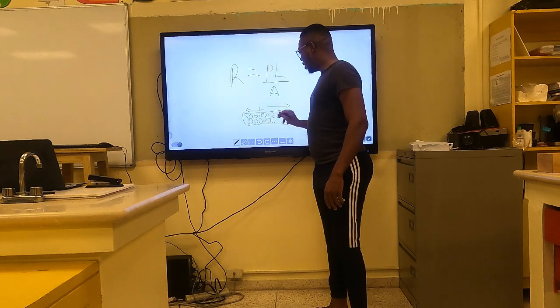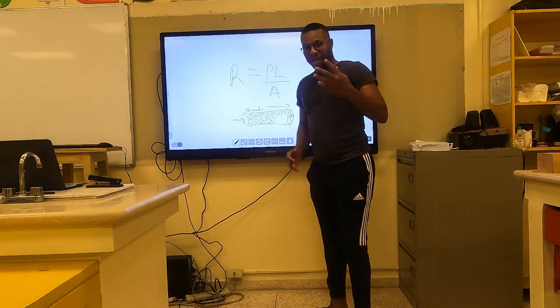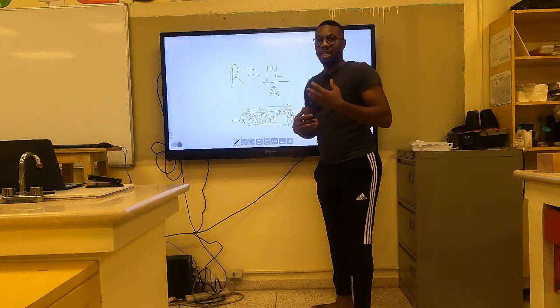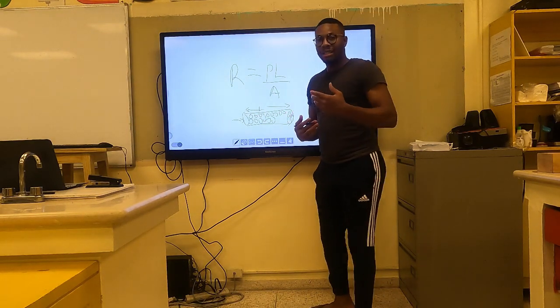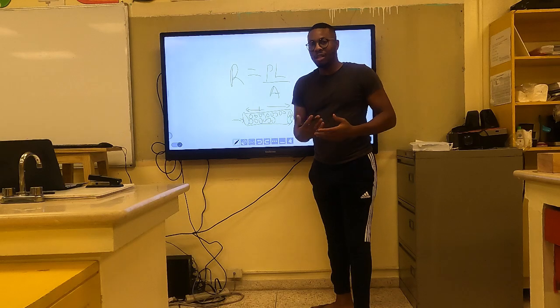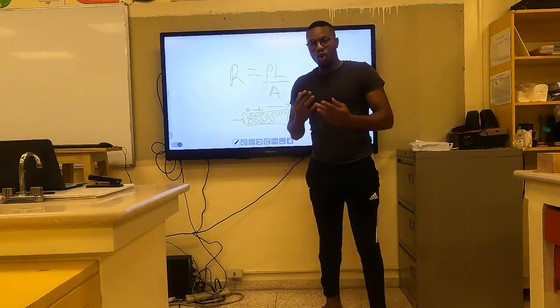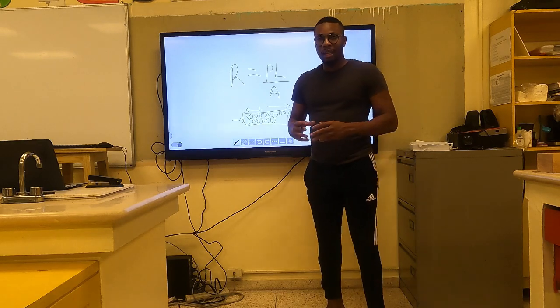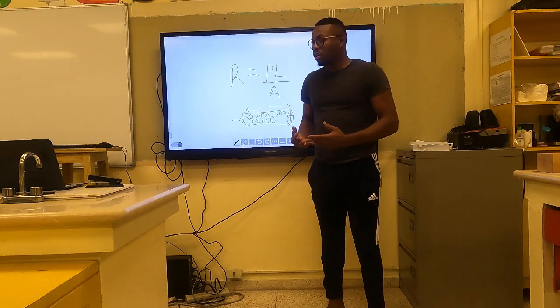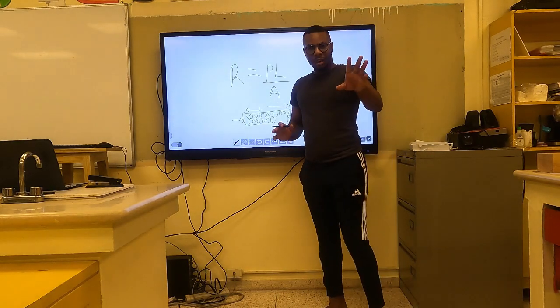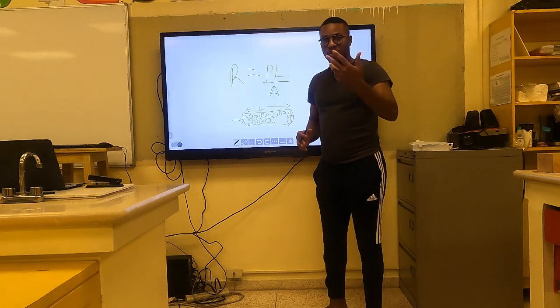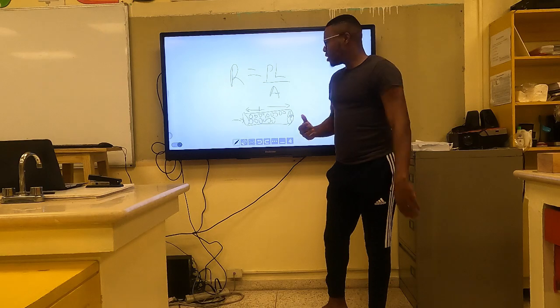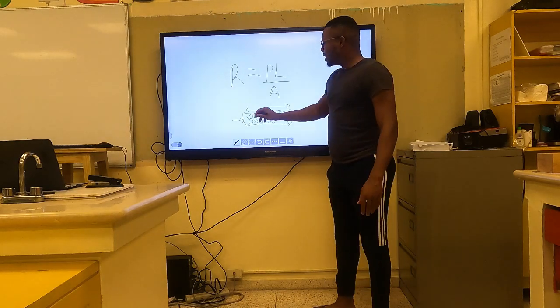Now as the current flows from one end, that current will be affected by how many particles are inside the wire, which speaks to the resistivity of the material. Resistivity (rho) refers to the degree to which electrons are opposed as they flow through a conductor. Every material that allows current to flow has its own unique resistivity.